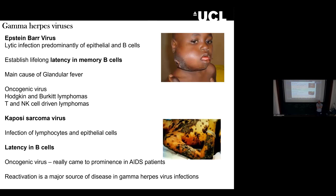So integration is only seen for HHV six and seven. For all the others — HSV one, HSV two, VZV, CMV, EBV, and KSHV — the genome is episomal. We don't really know why we see this HHV six and seven integration and what role it serves.